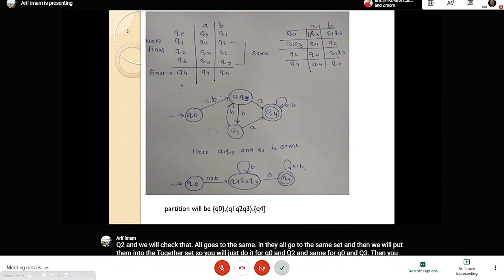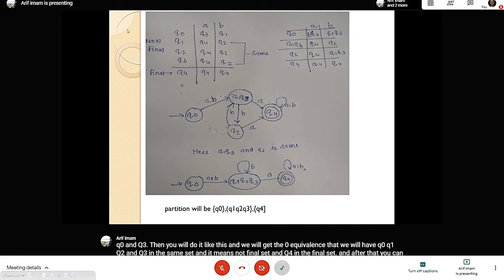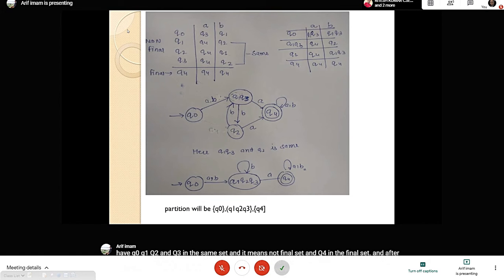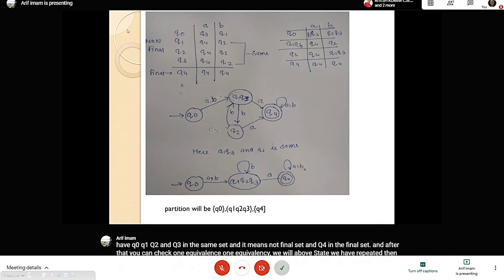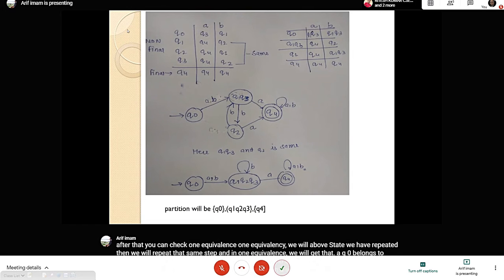For one-equivalence, we repeat the above step and find that Q0 belongs to one set, Q1 and Q2 and Q3 belong to another set, and Q4 is separate. So Q0 is alone, {Q1, Q2, Q3} are together, and Q4 is separate.